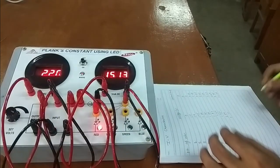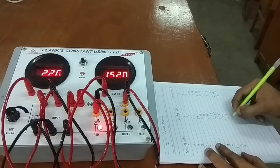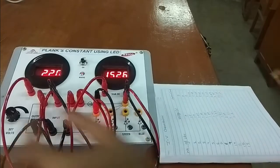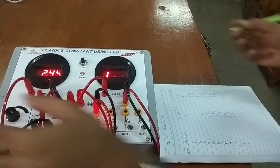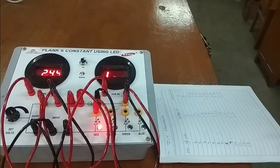At voltage 2.2, observation number 13, 2.2, current is 15.22. And beyond that, it is going beyond the limit of ammeter. We will stop it here.